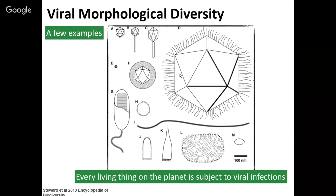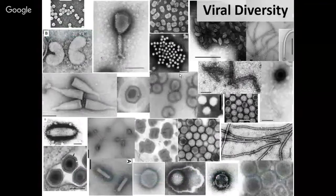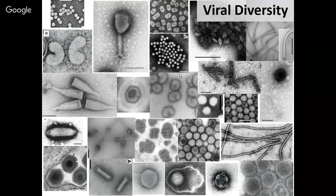Just our species — humans — we have hundreds of different viruses capable of infecting us, exploiting our cells' resources to make copies of themselves. In the process, they can cause illness, sometimes very severe, including death. But a lot of viruses, through a long period of co-evolution, cause illness that's not very severe, like the common cold. These electron micrographs show viral diversity in terms of what they actually look like under the electron microscope, which is required to see them because most are quite small.